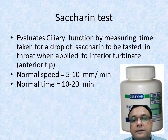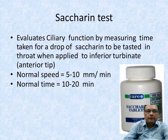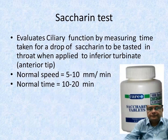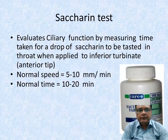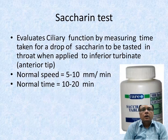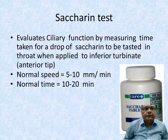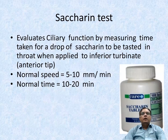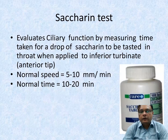The saccharine test evaluates ciliary function by measuring the time taken for a drop of saccharine to be tasted in the throat when applied to the inferior turbinate. Normal speed is 5 to 10 mm per minute; normal time is 10 to 20 minutes.